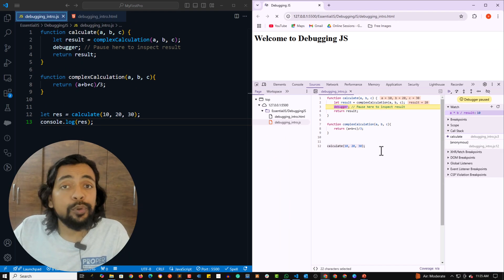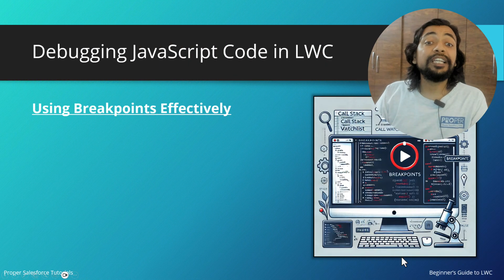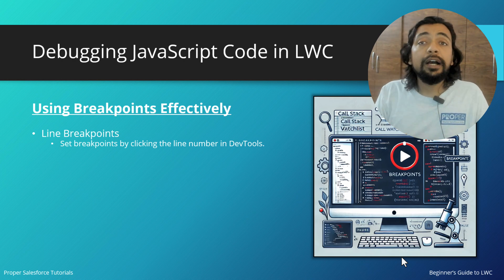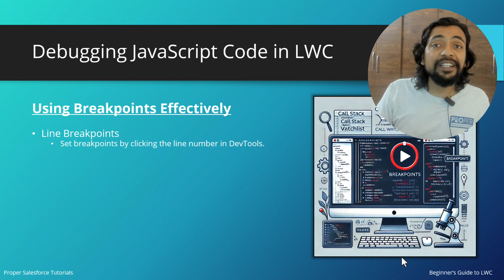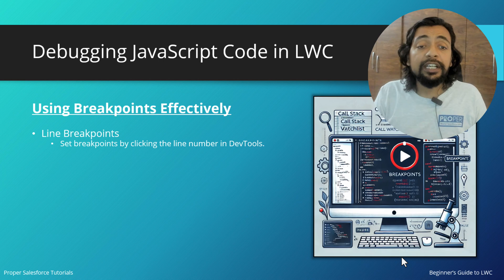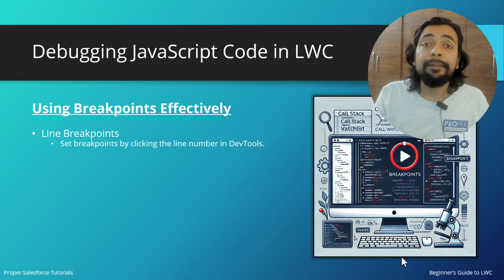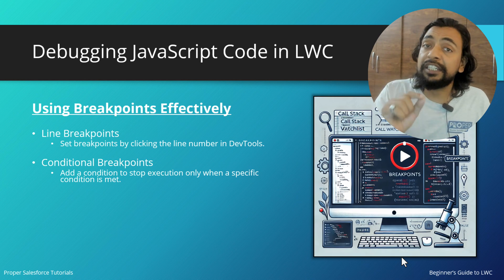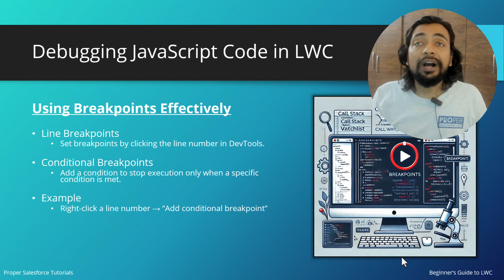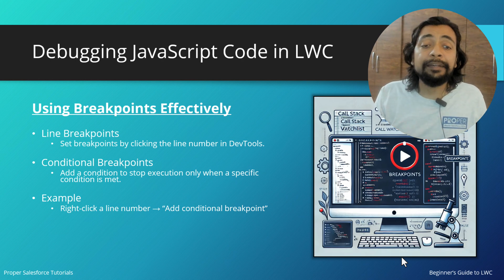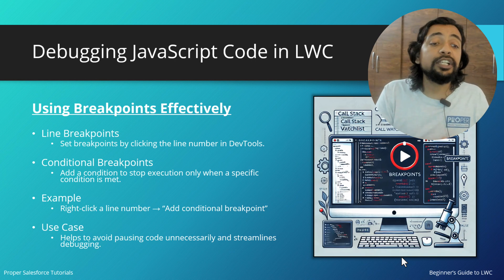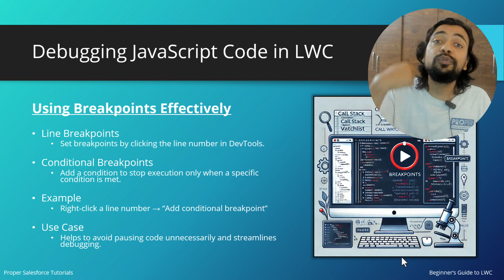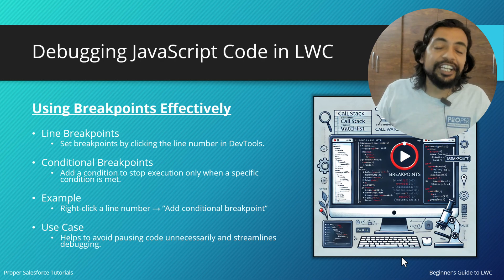Breakpoints are another way to pause the program — just like the debugger statement. Setting a breakpoint pauses execution. There are different types: line breakpoints, where you click the line number in dev tools to add a breakpoint, and conditional breakpoints, where execution stops only when a specific condition is met. To add a conditional breakpoint, right-click the line number and select 'Add conditional breakpoint'. This avoids pausing code unnecessarily.